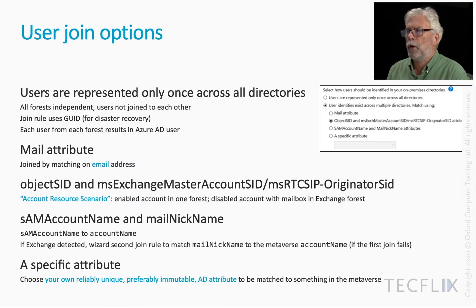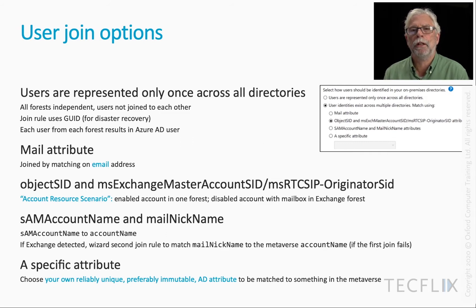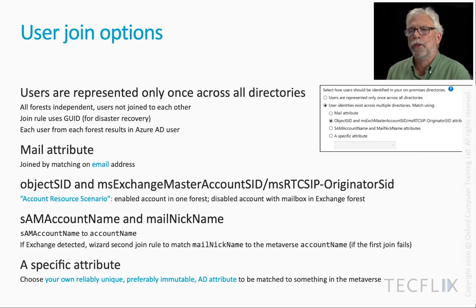If we take the first option — users are represented only once across all directories — what we're saying is that all the forests are independent. The only reason for having a join rule is to mend things if they get broken, so for disaster recovery. A GUID is used, and GUIDs are going to be different across the forests, so there's never going to be any cross-forest joining. The result is that each user from each forest results in another Azure AD user.